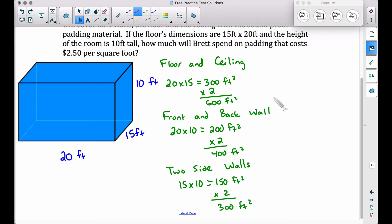So think about what we've just done. We found the area of the floor and the ceiling, 600 square feet. The front wall up here and the back wall, that's 400 square feet. And then the two side walls over here. We need to add up all of these areas to find what's called the surface area. So taking the 600 plus the 400 plus the 300, we get a total surface area of 1,300 square feet.